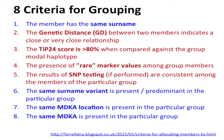To summarize the eight criteria for grouping: the member has the same surname; genetic distance indicates a close or very close relationship; the TIP24 score is greater than 80%; the presence of rare marker values; SNP testing results are consistent among group members; the same surname variant is predominant in the group; the same location is present; and the same ancestor may appear. These are the eight criteria for grouping, and that is probably the most important message to take away from this session.